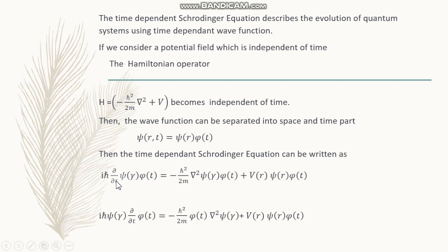On the right-hand side, d/dt acts on φ(t), and del-squared is a spatial derivative operator acting only on the space part. Since φ(r) is the spatial part and V(r) is a potential field that does not depend on time, V is treated as independent of time — assume it is a constant — so it has nothing to do with the separation.